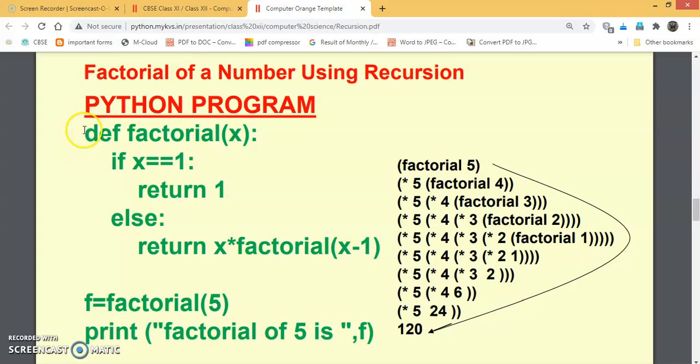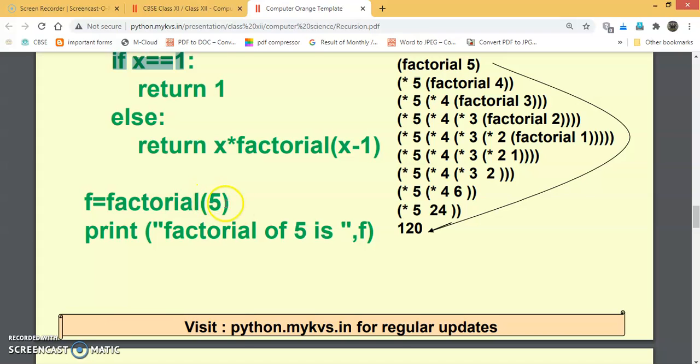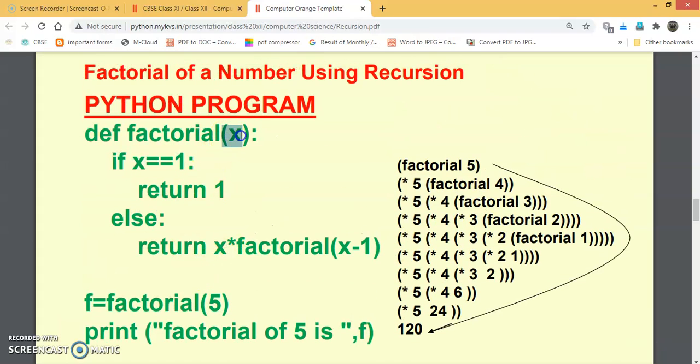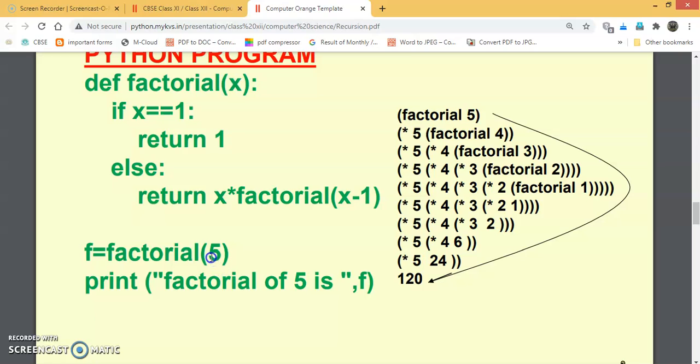The question is: def factorial(x), if x is equal to 1, return 1. If x becomes 1, you have to return 1. Else, return x into factorial of x minus 1. So x into factorial of x minus 1, this process will continue until the value of x becomes 1. Then f is equal to factorial 5. You have input 5, so 5 is transmitted into x, that is the actual parameter.